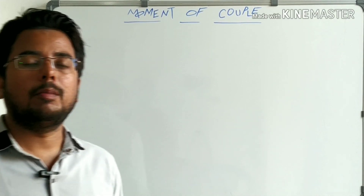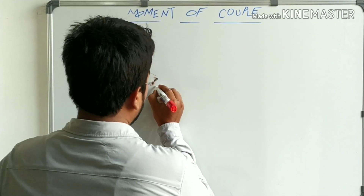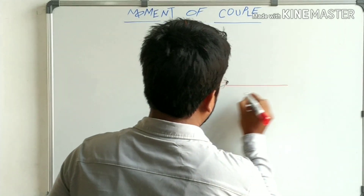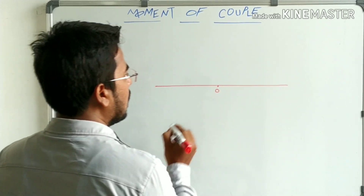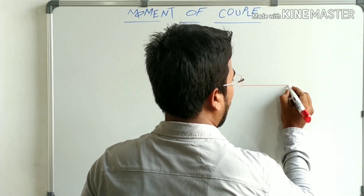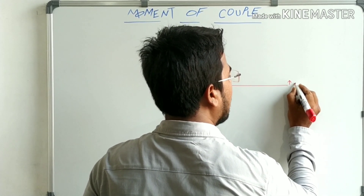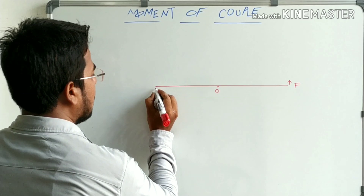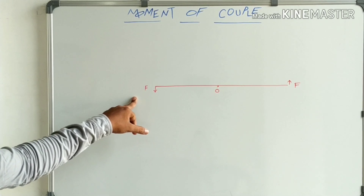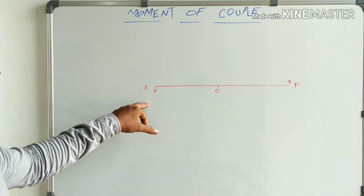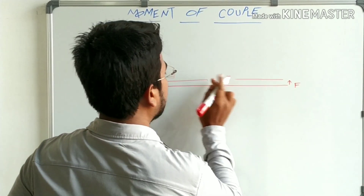Let us derive moment of couple. Let us take a rod pivoted at its midpoint — say this midpoint is O — and a force of magnitude F is applied at point A, and the same magnitude force F is acting at point B but in opposite direction. The distance between the forces is D.